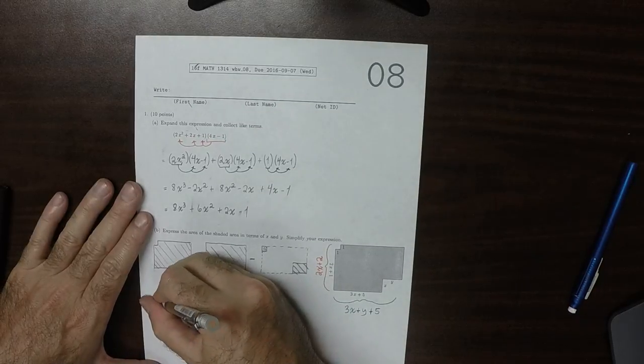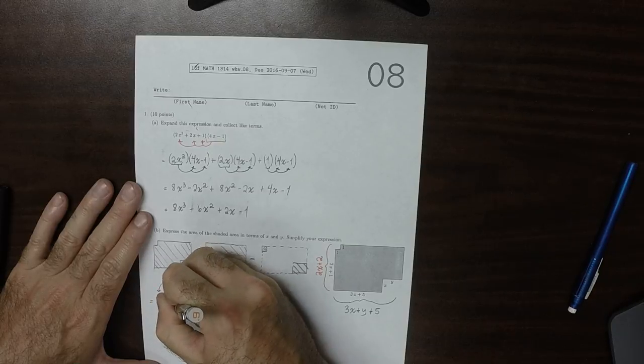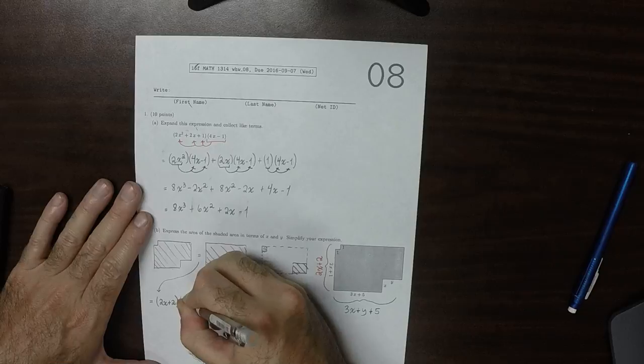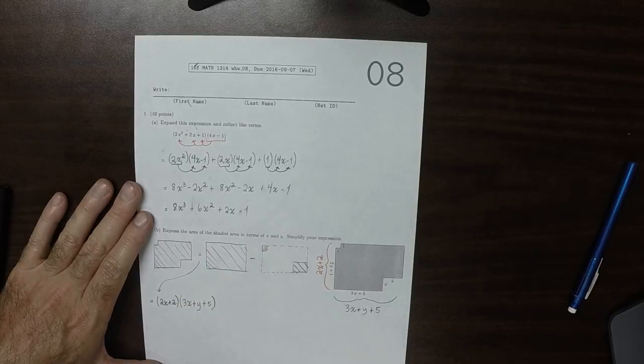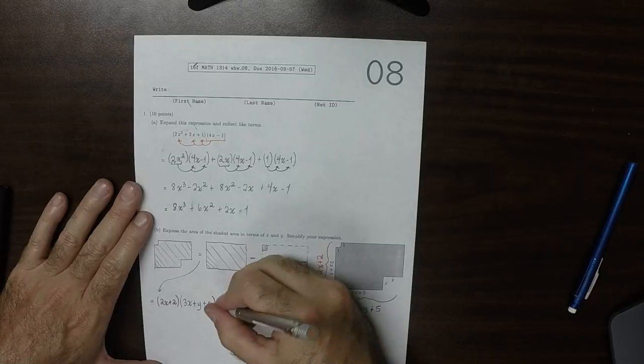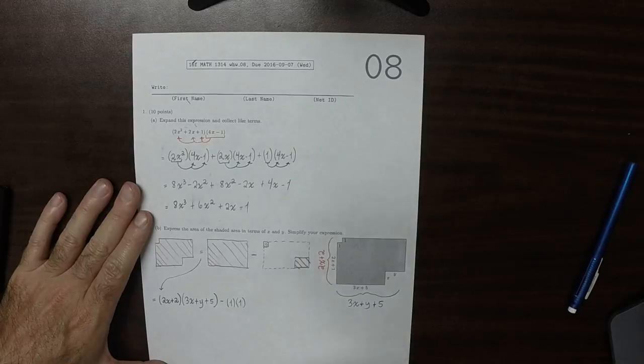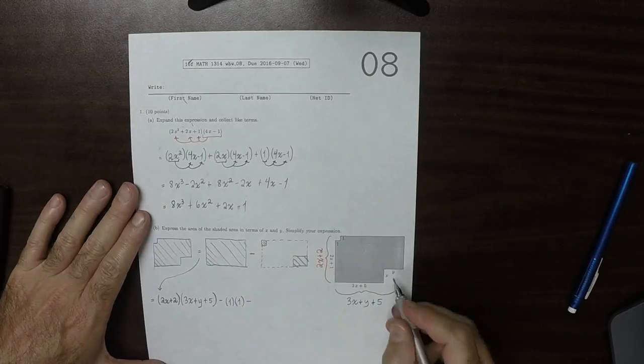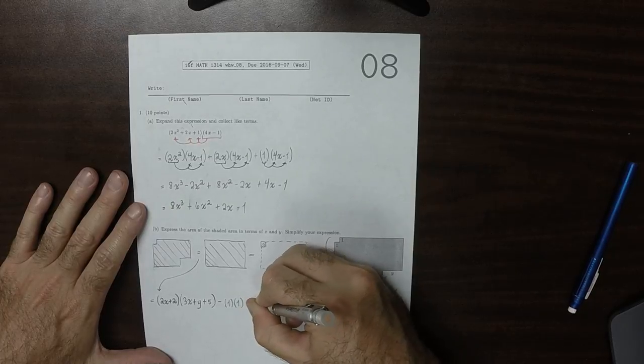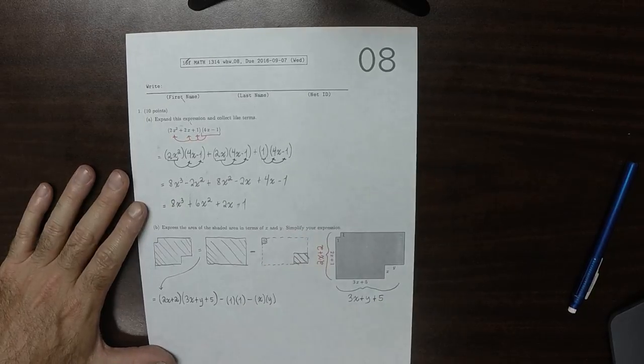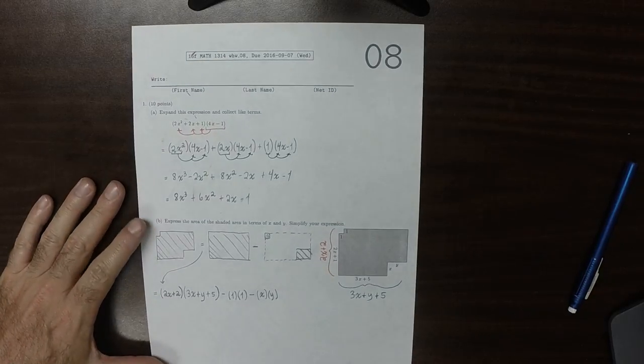So the product of those two, that would be 2x plus 2, multiplied by 3x plus y plus 5, and then minus the little rectangle, so 1 times 1, and then minus the other little rectangle, so that would be x times y. So now we need to carry out this multiplication and simplify it.